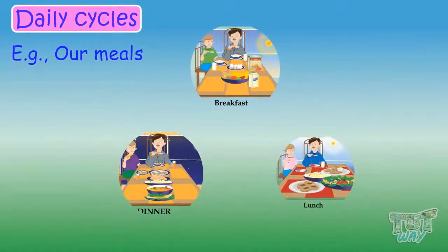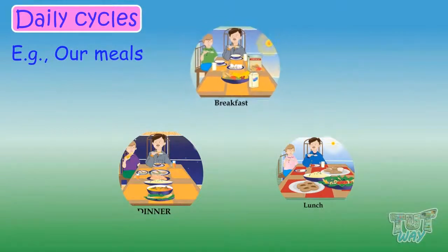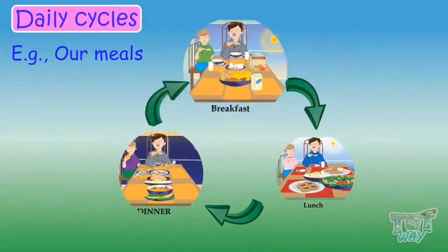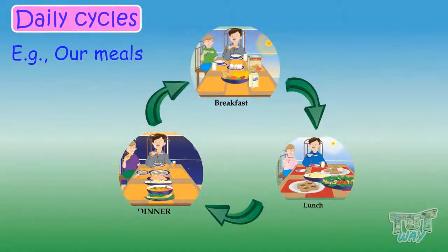Daily meals. Kids, we take three to four meals a day. First we have breakfast, then lunch, then dinner, and then again breakfast in the morning. So it's also a cycle.